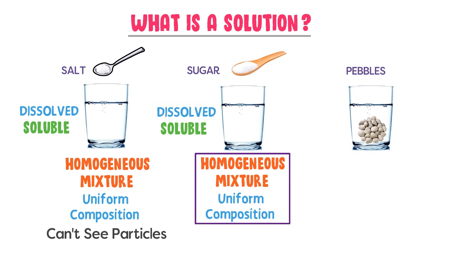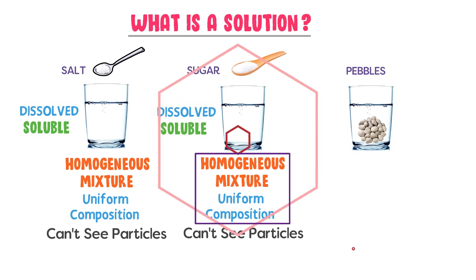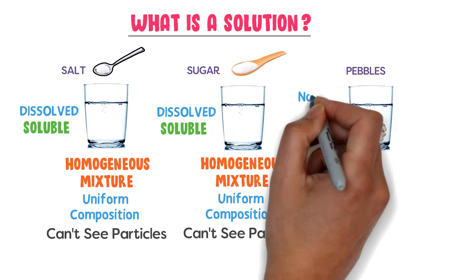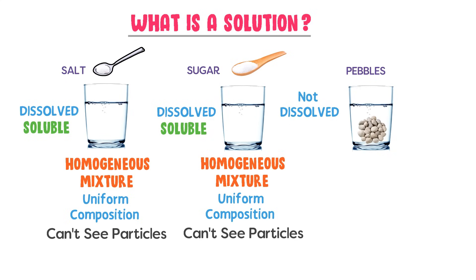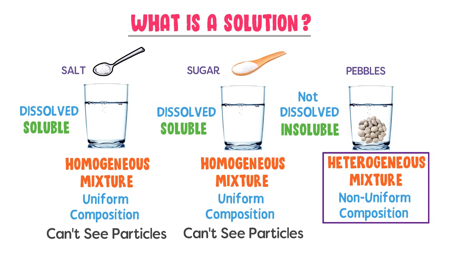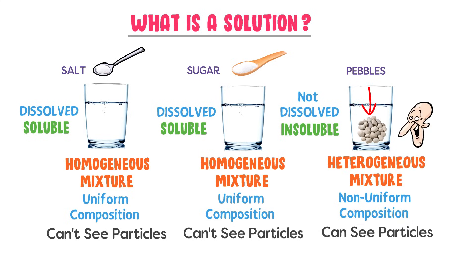By homogeneous mixture and uniform composition, I mean that we cannot spot or see the particles of sugar and salt with the naked eye. Thirdly, I observe that sand or pebbles do not dissolve in the water. So pebbles are insoluble in water and form a heterogeneous mixture or non-uniform composition, meaning we can spot or see the particles of pebbles and water with the naked eye.